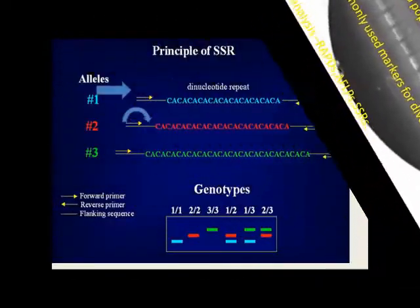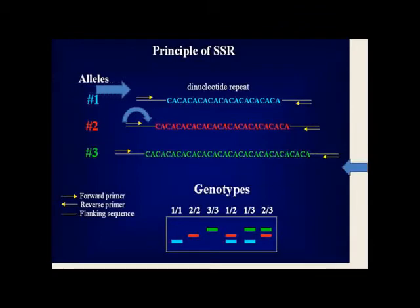SSR markers consist of a forward primer, reverse primer, and flanking region. Selection of the PCR primer is based on the region flanking the SSR.